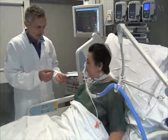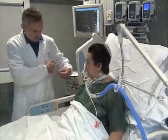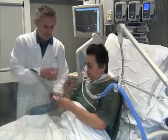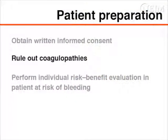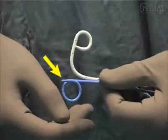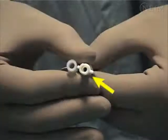When appropriate, before starting, explain the procedure to the patient and obtain written informed consent. Coagulopathies should be thoroughly ruled out and, if possible, corrected before the procedure. Whether to carry out the procedure in a patient at risk of bleeding should be based on an individual risk-benefit evaluation. The use of a small-bore catheter is safer in all patients with coagulation abnormalities.